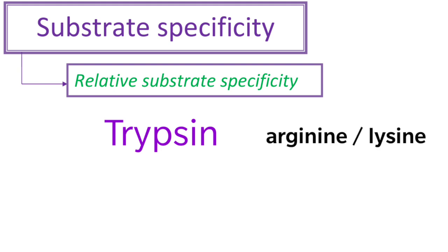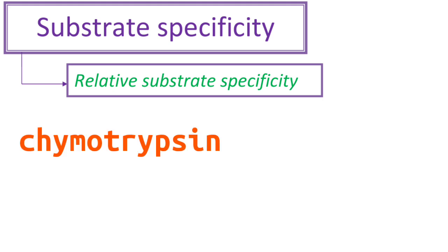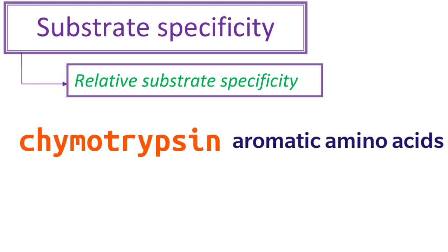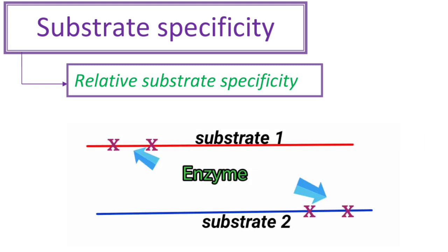Similarly, chymotrypsin can hydrolyze the peptide bonds formed by aromatic amino acids in any protein. So these enzymes can act on different substrates which contain the groups formed by these amino acids.